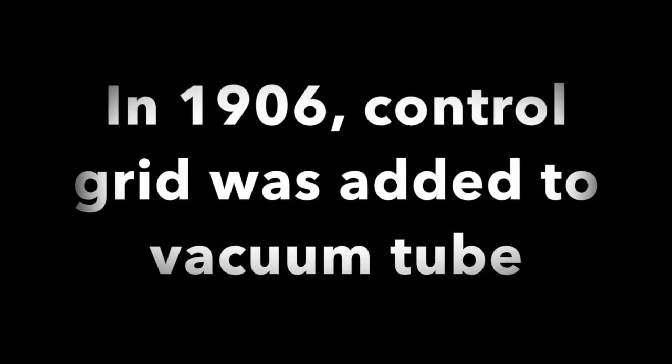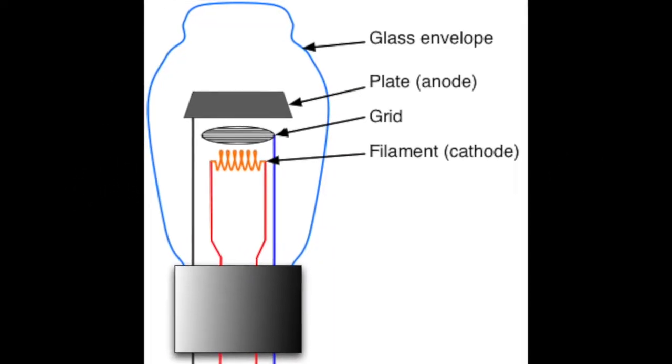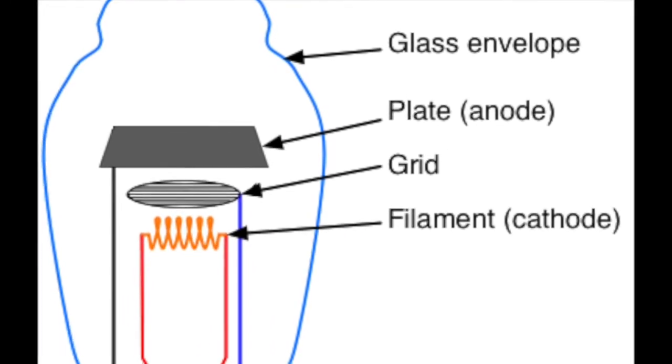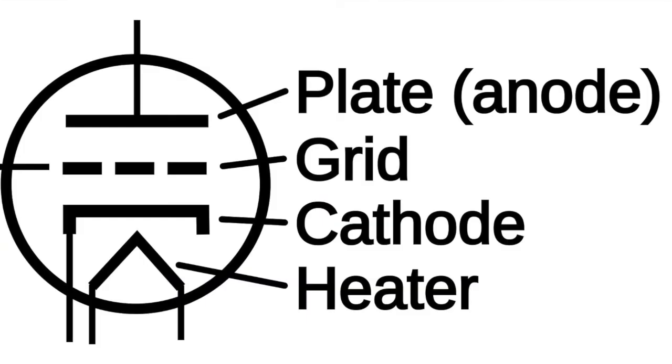Thereafter, in the year 1906, Lee De Forest added a third element called control grid to the vacuum diode, resulting in the first amplifier which is called the triode. A triode is an electronic amplifying vacuum tube consisting of three electrodes inside an evacuated glass envelope.